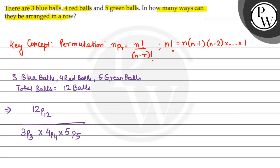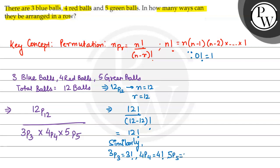Now let's solve this. For 12P12, we have n equals twelve and r also equals twelve. By using the formula, we get twelve factorial upon twelve minus twelve factorial, which is twelve factorial upon zero factorial. Since zero factorial is one, this equals twelve factorial. Similarly, 3P3 equals three factorial, 4P4 equals four factorial, and 5P5 equals five factorial.